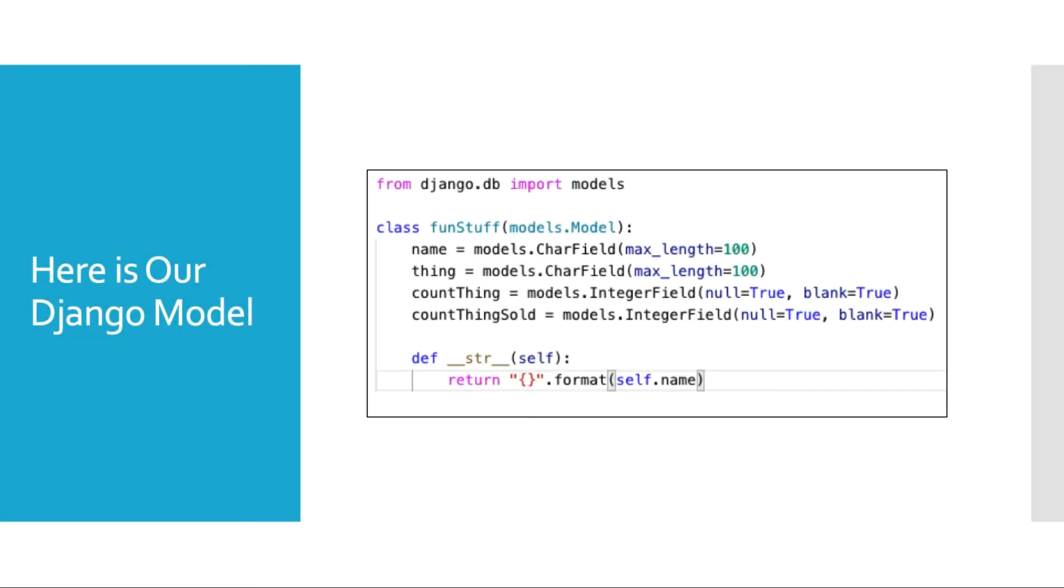We have a very simple model here. We have four fields: name, thing which will turn out to be our product, count thing which will turn out to be the number of products we have in inventory, and then count things sold will be the number of products that that particular salesperson has sold.